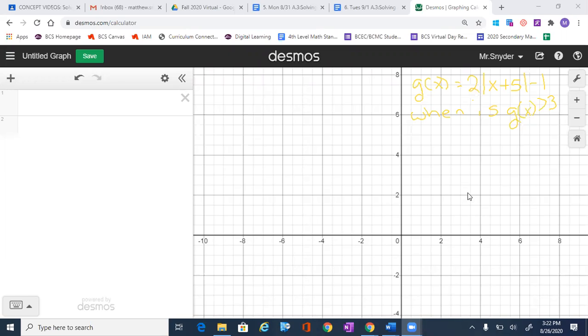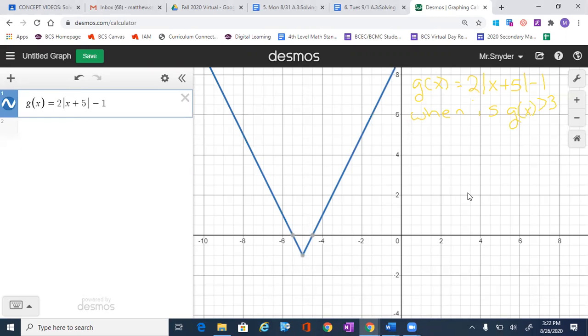The first thing we are going to do is start by typing in 2 absolute value of x plus 5 minus 1. We can go ahead and call that g(x) if you would like to. I'm going to put in that one statement: g(x) equals 2 absolute value of x plus 5 minus 1.